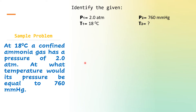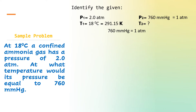Did you notice, learners, something about our given? The units of initial pressure and final pressure are different — initial pressure is in atmosphere, while final pressure is in millimeters of mercury. Our initial temperature is 291.15 Kelvin — we added 273.15 to 18 degrees Celsius. Now let us convert the pressure. We know that 760 millimeters of mercury is equivalent to 1 atmosphere.